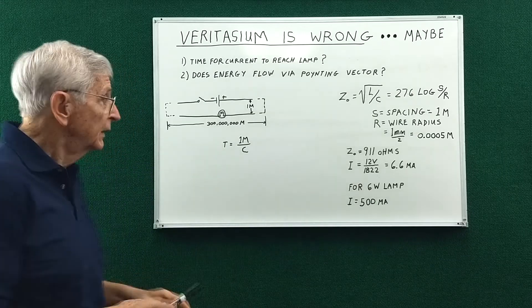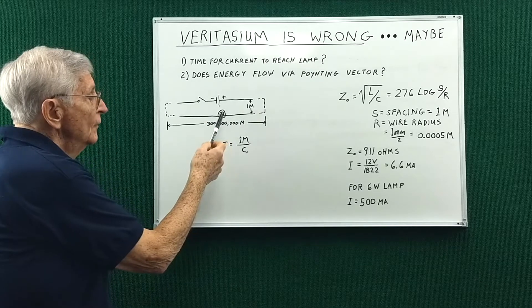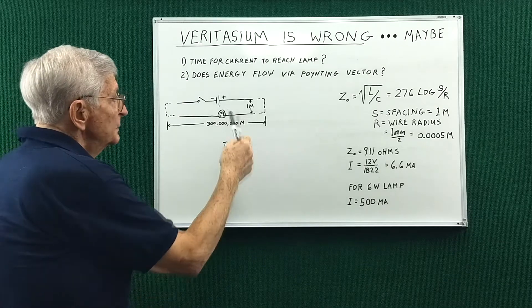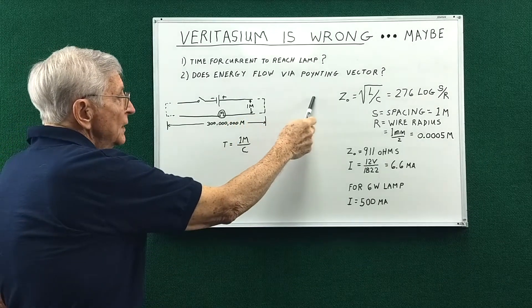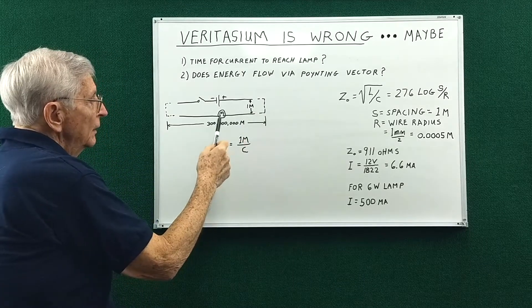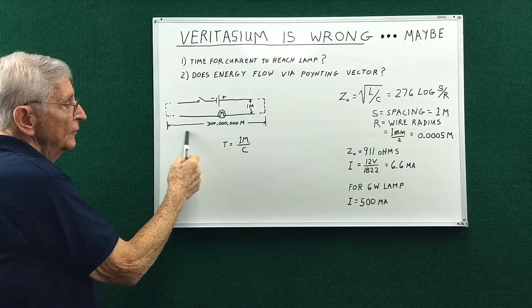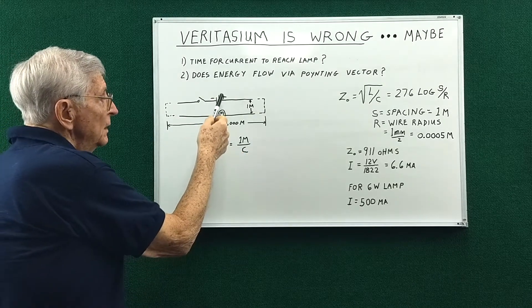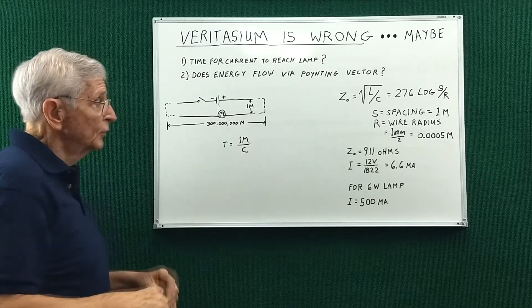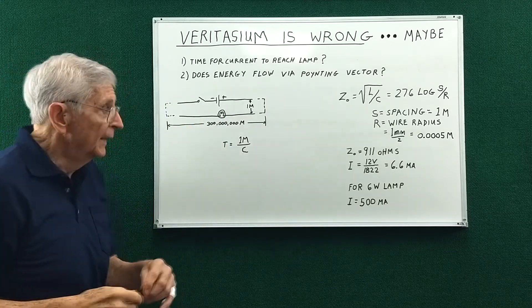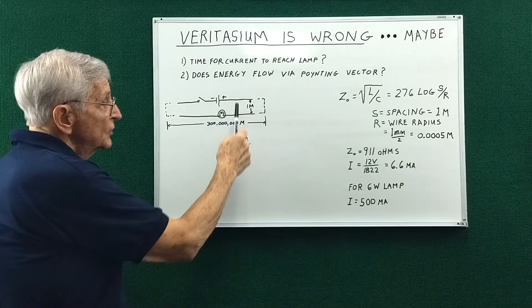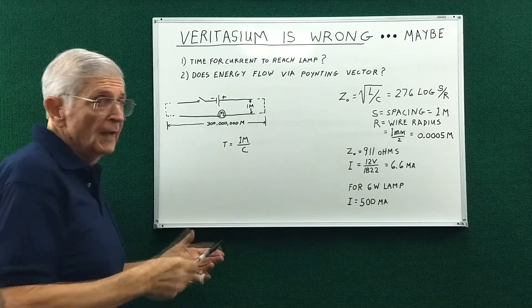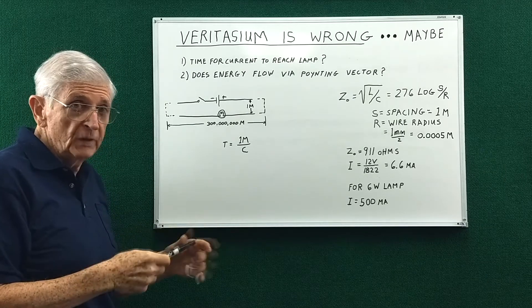So basically Derek had a lamp and a battery and a switch, and the thought experiment was if these wires go out for huge distances, in fact 300 million meters, what's the time for the lamp to light after the switch is thrown? And there's some caveats such as the wires have zero resistance and the light bulb lights as soon as any current reaches it.